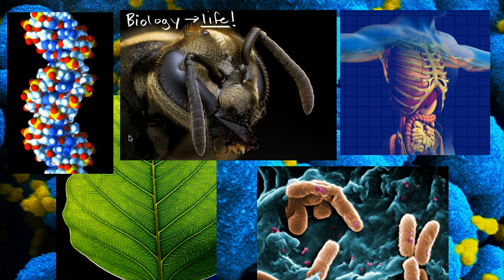How do we start off with inanimate molecules and atoms? This right here is a molecule of DNA. How do we start with things like that and get the complexity of living things? And you might be asking: what makes something living?